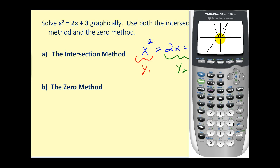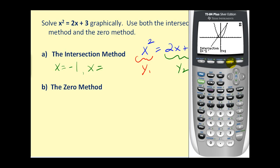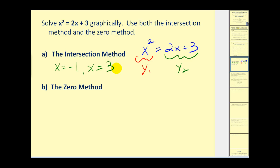To find the points of intersection, press second, trace, option five. Move the cursor close to the first point on the left and press enter three times. Because the equation is in terms of x, the x-coordinate of the intersection point is our solution: x equals negative one. Then press second, trace, option five again, move to the other intersection point, press enter three times, and the second solution is x equals three.